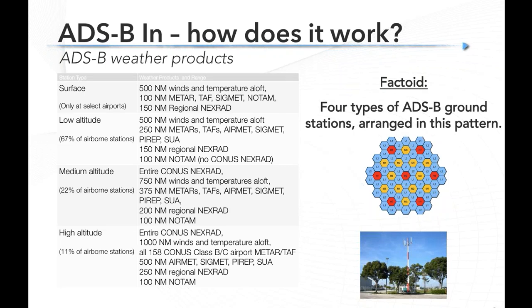Now let's talk about the weather part — really what's been responsible for a lot of the interest in ADS-B, since weather is something all pilots deal with on almost every flight. If you've flown with XM weather, a lot of this is similar. ADS-B relies on a network of ground stations across the United States. Like VORs, there are actually four different types of ADS-B ground stations: surface, low, medium, and high. In practical flying, you're not going to worry about which one you're getting — you'll typically be receiving five, six, eight, or twelve towers at once.